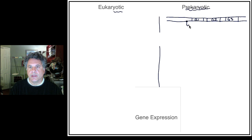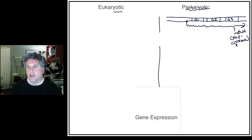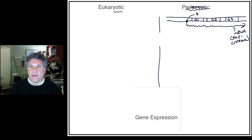There is a transcription unit which transcribes all three of these genes at once into one messenger RNA. That messenger RNA is polycistronic, meaning the same messenger RNA is decoded into three different proteins. Three different genes are transcribed into one mRNA, and transcription starts at the plus one site of the gene.